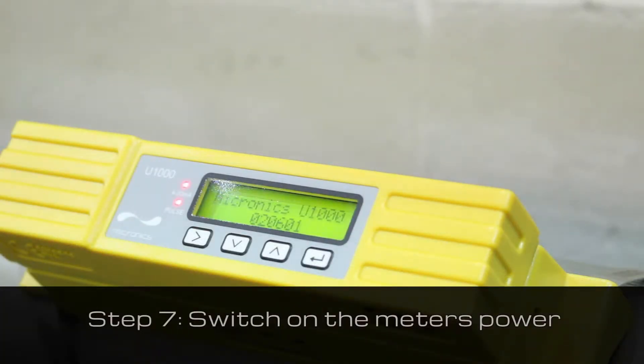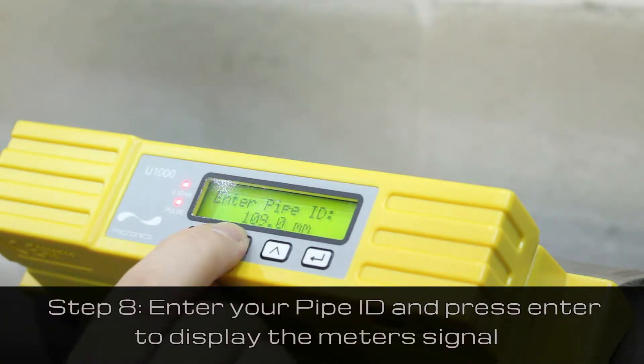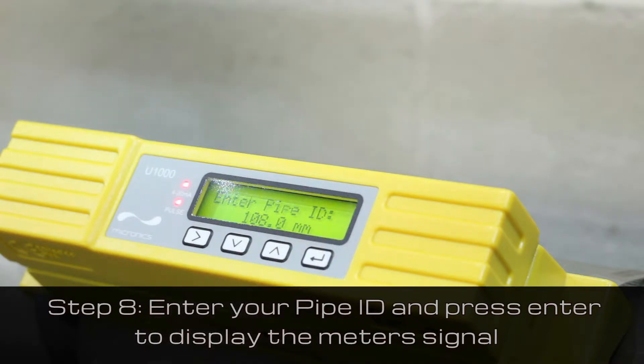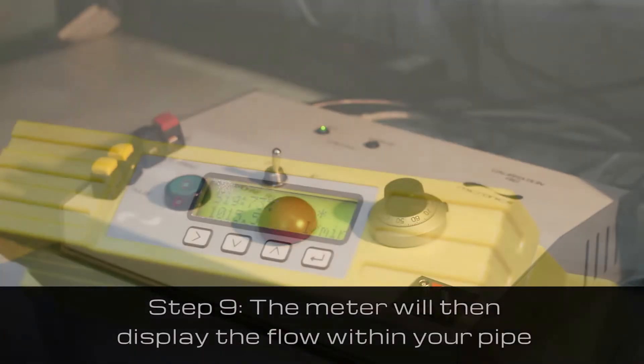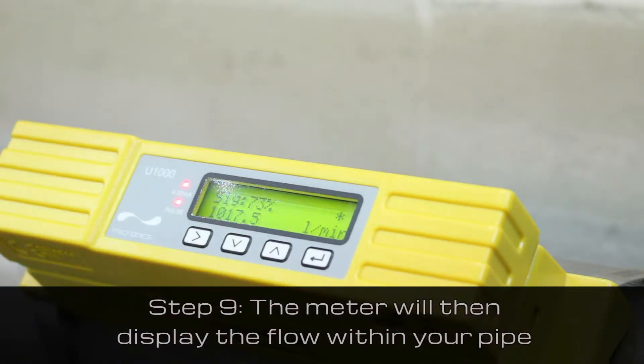Switch on the meter's power. Then enter your pipe ID and press enter. This will display the meter's signal. Once the flow has been switched on, the meter will display the flow within your pipe.